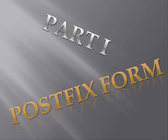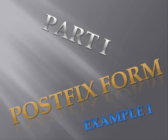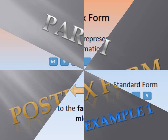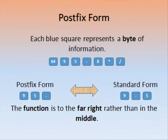I have told you some of the disadvantages of standard form, so here is a new form called Postfix Form. All of the following examples will be read from left to right. Each blue square represents a unit of information. With computers, the unit is called a byte. For example: 64, 9, 5, minus, 8, times, divide. In standard form, 9 minus 5 is written as '9 5 minus' in Postfix Form. In Postfix Form, the function — in this case the minus — is moved to the far right rather than the middle.